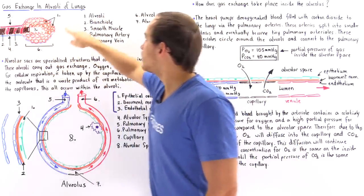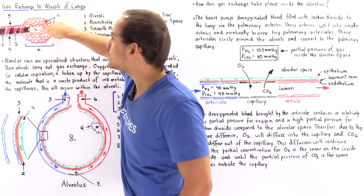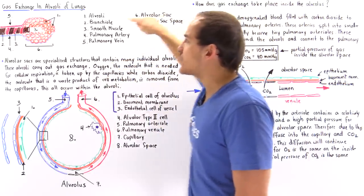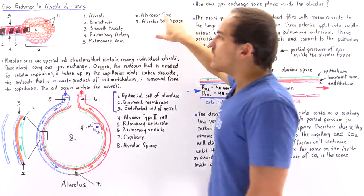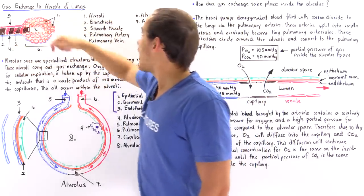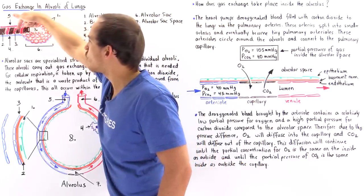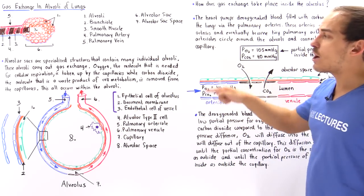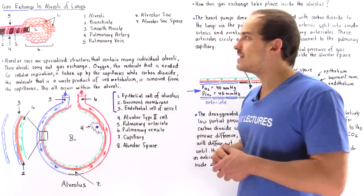Structure number two is the bronchiole, shown in brown, and it extends all the way into space number seven, which is the alveolar sac space. This entire orange section is our alveolar sac, described by number six. Along our bronchiole, we also have regions shown in red — these represent our smooth muscle that extends around the bronchiole.